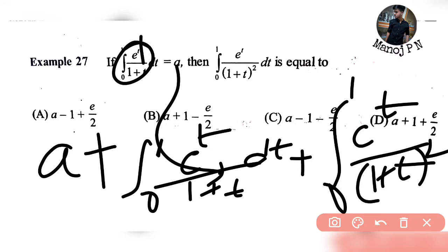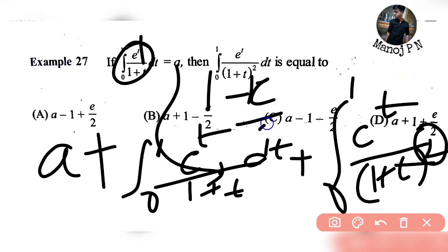A is equal to what we need to integrate. You can use integration by parts as well, or normal integration. You can use limits. You can use 1 minus e divided by 2.